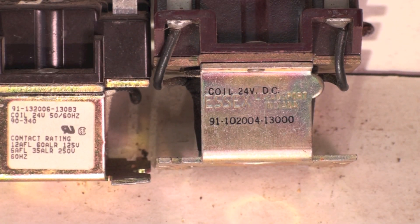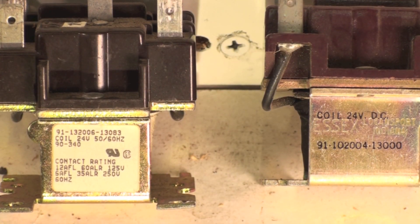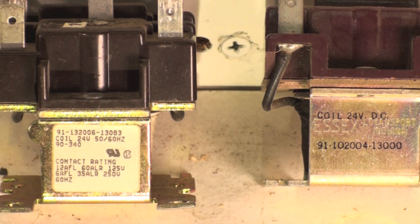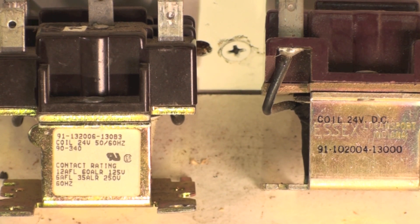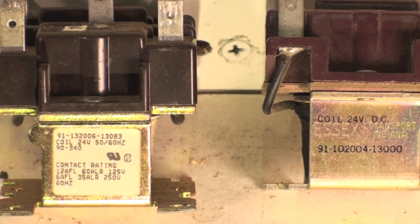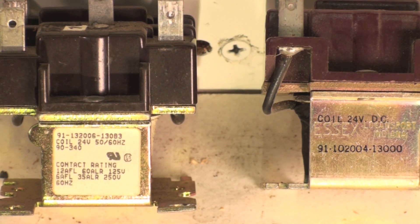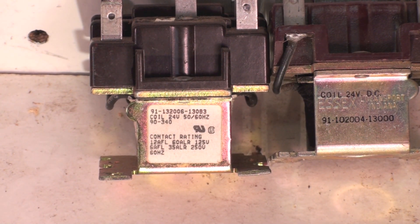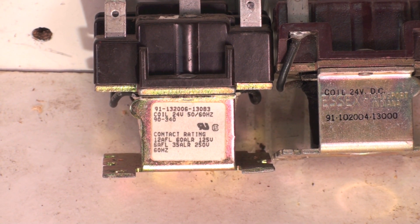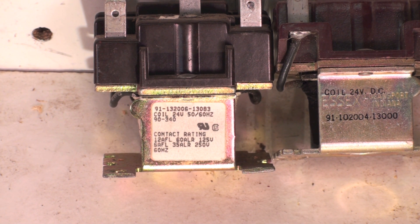We're going to compare the electrical characteristics of a DC versus an AC coil on identical relays. These two relays are identical except the right one says the coil is 24 volts DC and the one on the left says 24 volts 50/60 Hertz, which means it's AC.